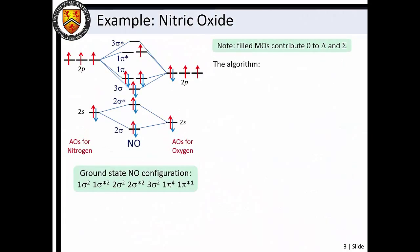Let's construct the term symbol that describes the ground state of nitric oxide. First note that filled molecular orbitals contribute 0 to the total spin and orbital angular momentum projection quantum numbers.